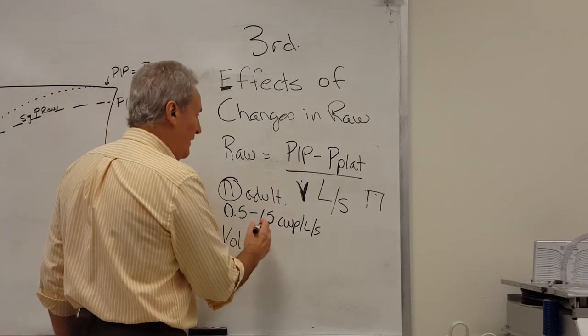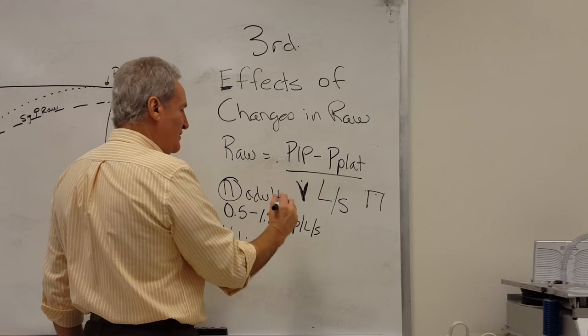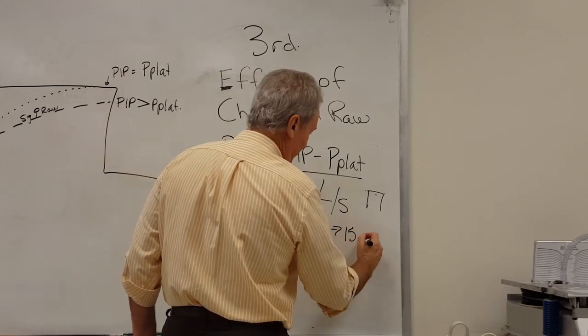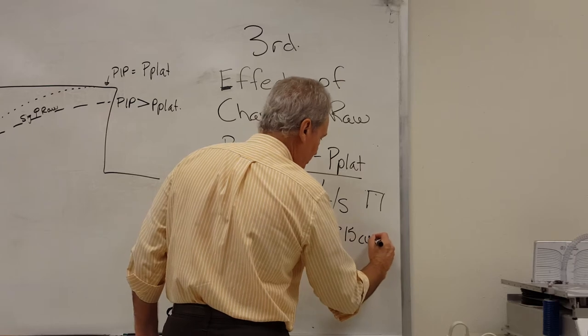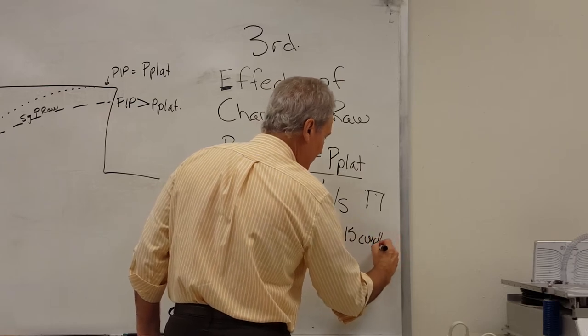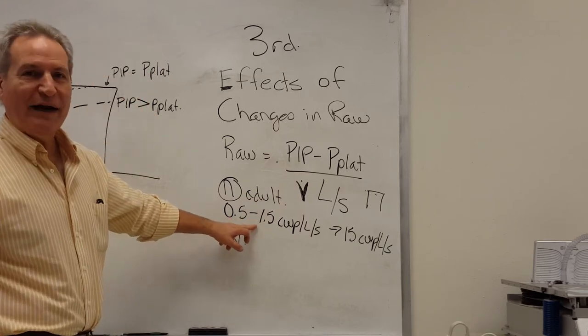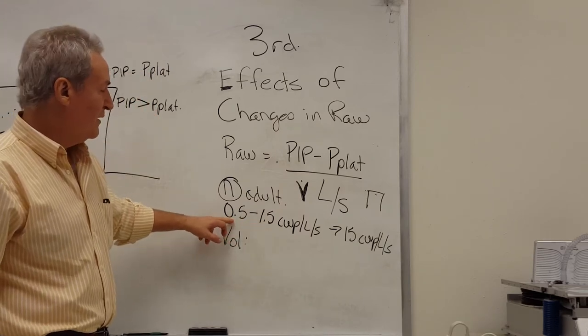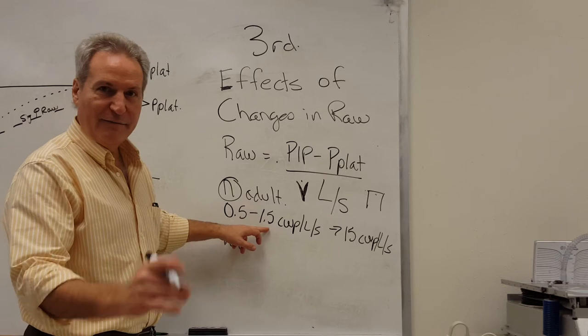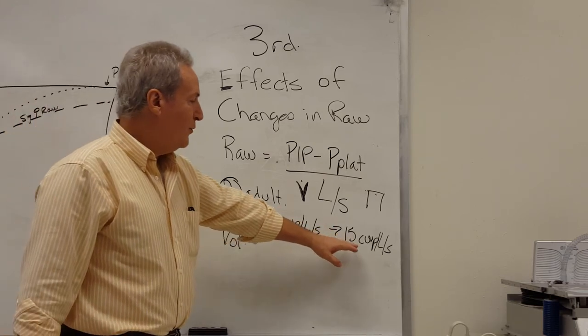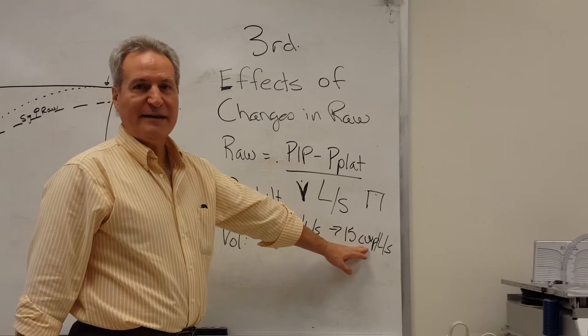If our RAW goes up significantly to, say, 15 centimeters of water pressure per liter per second, this is 10 times the normal. Normal for an adult is somewhere between 0.5 and 1.5, roughly depending on whose norms you're using.